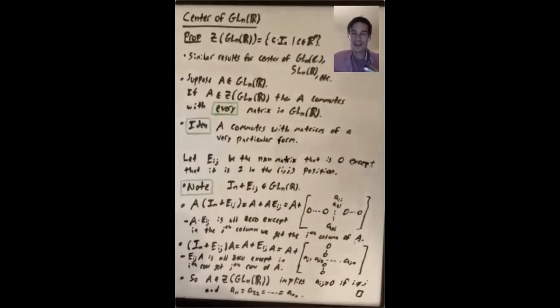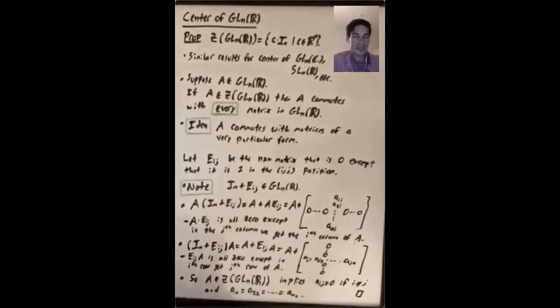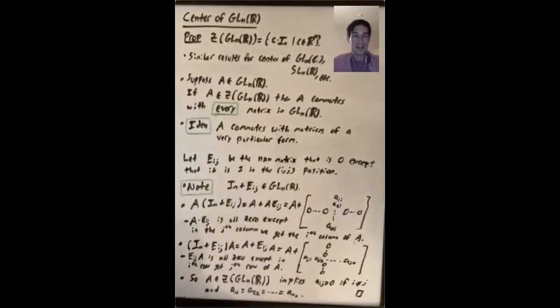There's one clever idea that goes into remembering this argument. Let's say that A is in GLnR, and if A is in the center, then that means A commutes with every matrix in GLnR. But if you just try to write down an arbitrary product A times B and set it equal to B times A, the equations you get are like a total mess. So the clever idea is that if A commutes with all the matrices, it commutes with all the matrices of a very particular form where writing down that product is going to be easy.